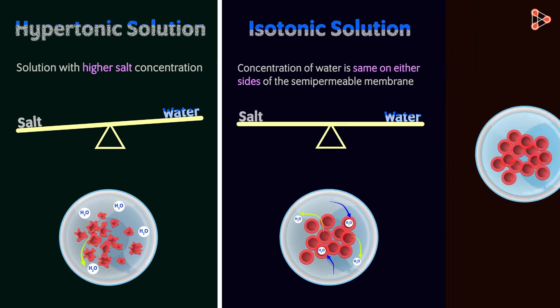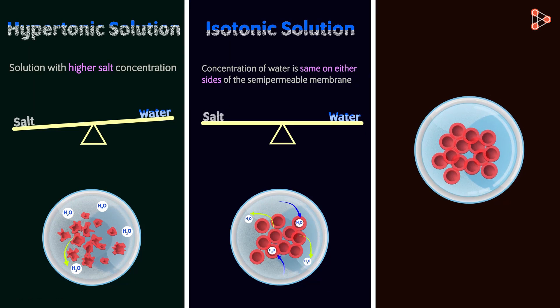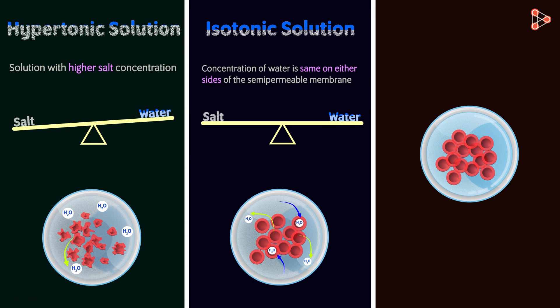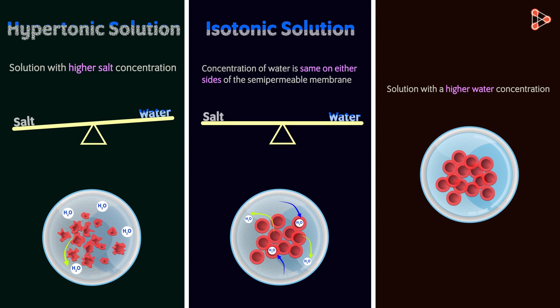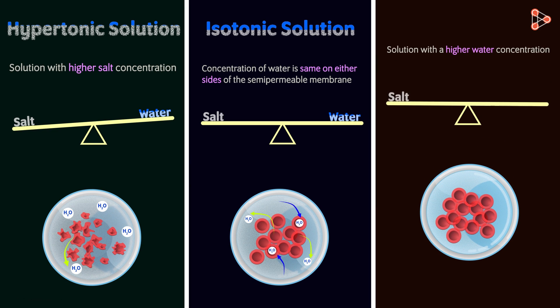Now let's focus on this third set. The cells in this case are surrounded by a dilute solution, that is by higher water concentration. The salt dissolved is less and the water content is higher. Therefore water molecules move inside the cells and hence the cells get swollen.